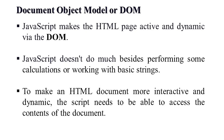The Document Object Model — since JavaScript doesn't understand or interpret an HTML page, to understand HTML, JavaScript creates a Document Object Model. So every element is there as an object. JavaScript makes the HTML page active and dynamic, meaning interactive, through the Document Object Model — that is DOM.